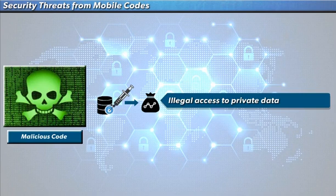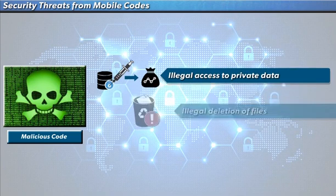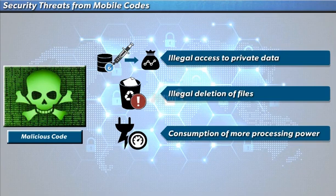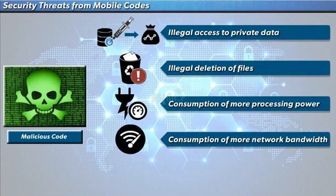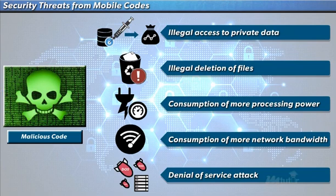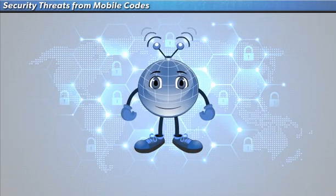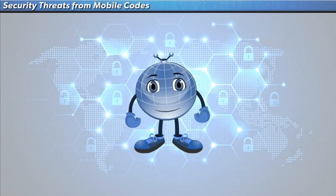Malicious mobile code may steal or manage to get illegal access to some private data — for example, the financial data of a company from a database residing on the host. Another problem is that mobile code may damage or consume host resources, like deleting files, consuming a lot of processing power or network bandwidth, or causing denial of service attacks.